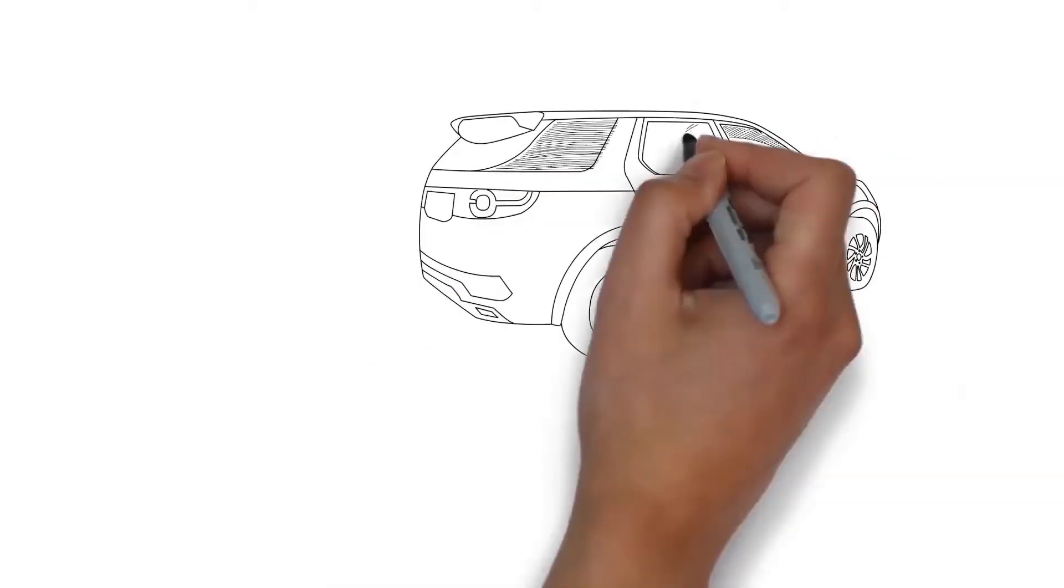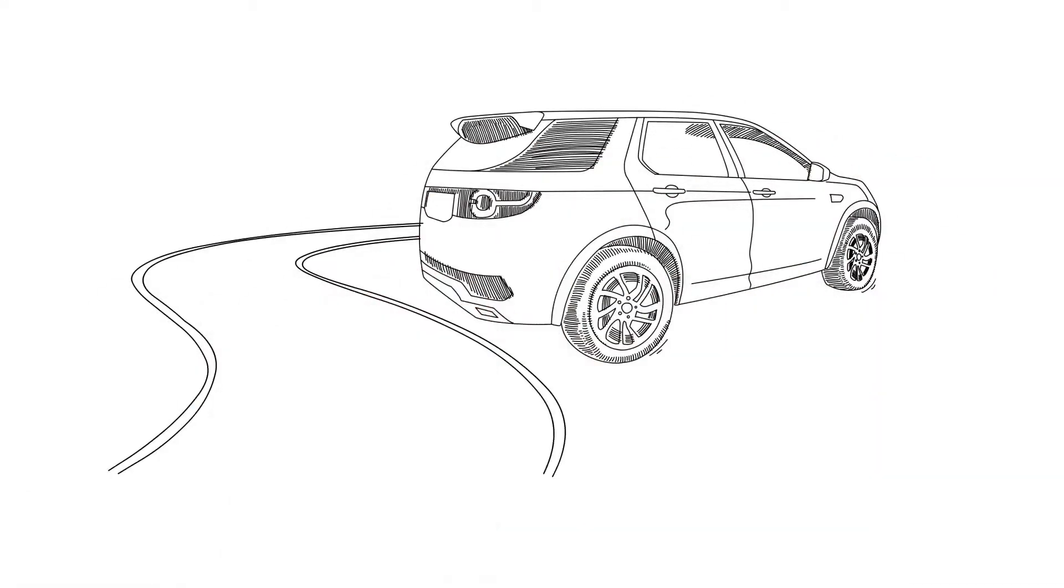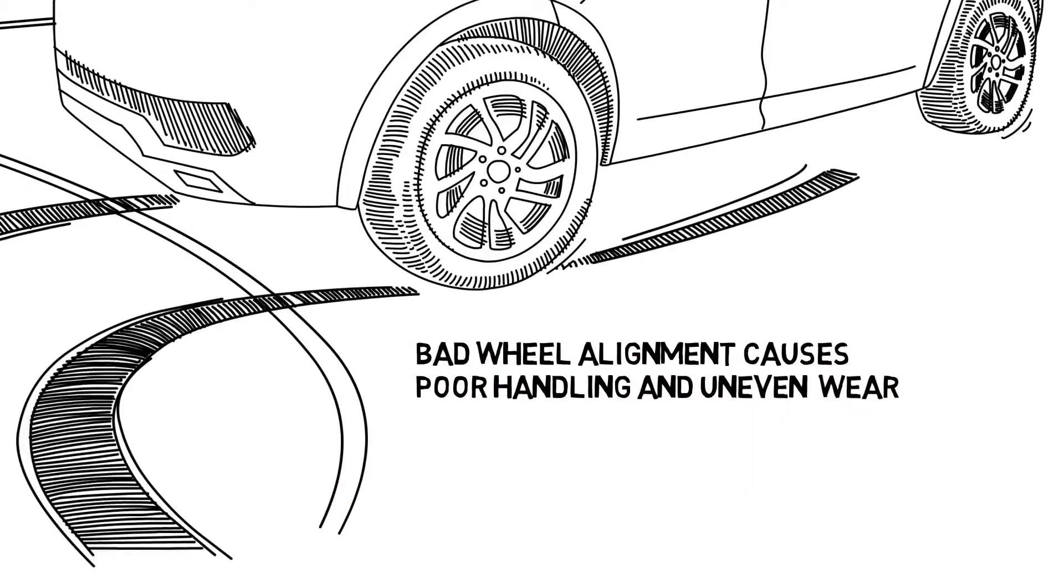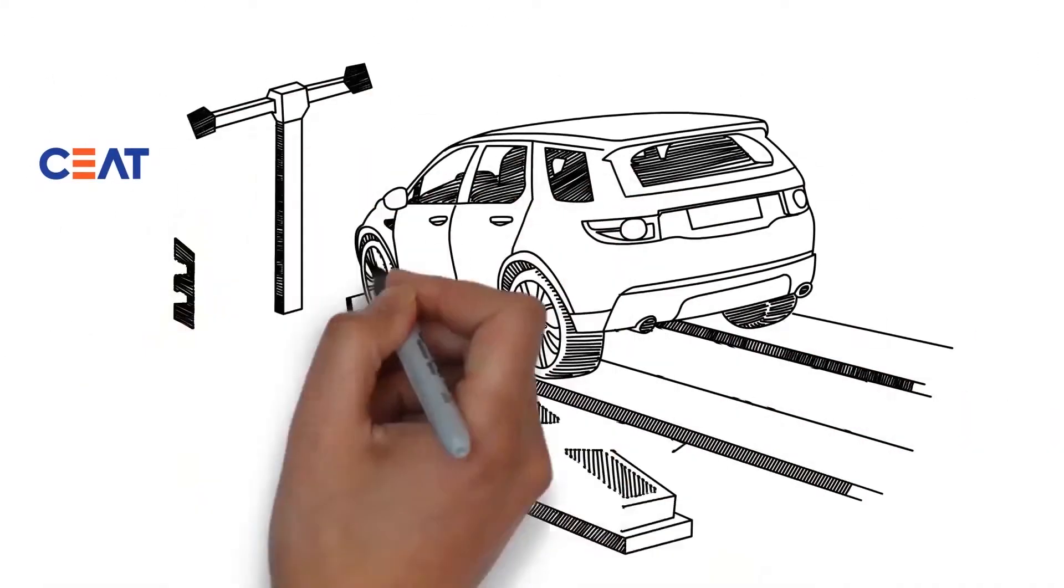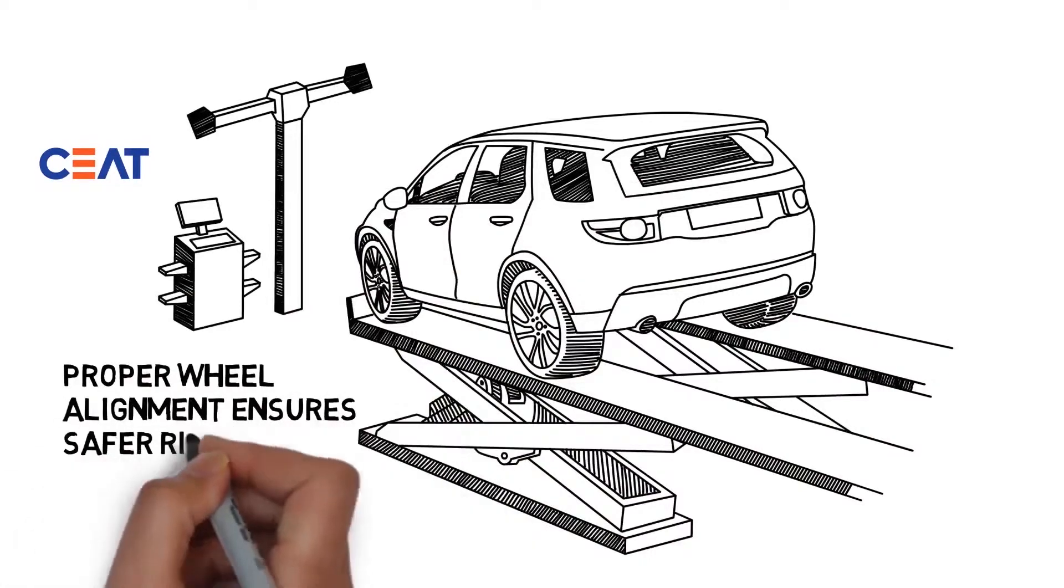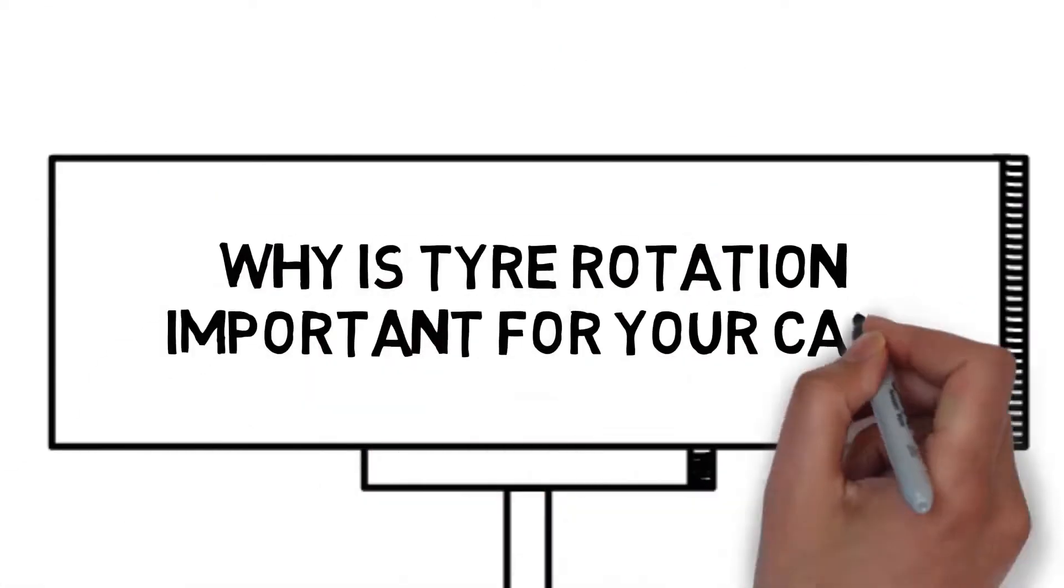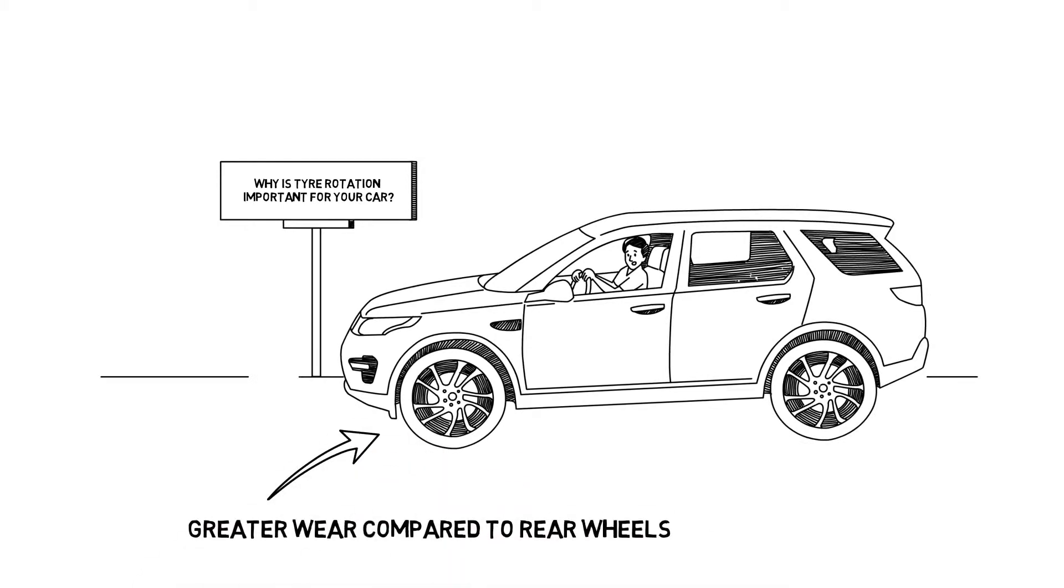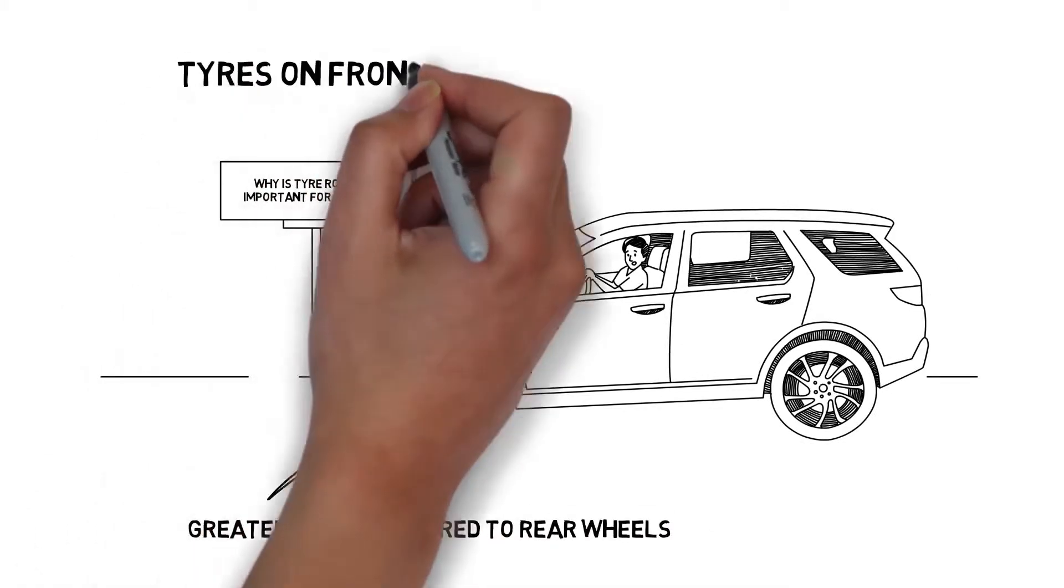Bad wheel alignment causes uneven wear and the car may pull to one side while driving. That's dangerous. Proper wheel alignment prevents this and ensures safer rides.